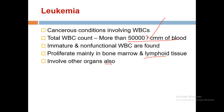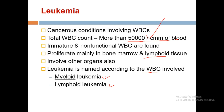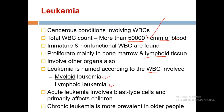Leukemia is named according to the WBCs involved: myeloid leukemia and lymphoid leukemia. Myeloid leukemia shows increased granulocytes (neutrophils, basophils, eosinophils) and monocytes; lymphoid leukemia shows increased lymphocytes. Acute leukemia involves blast-type cells and primarily affects children, while chronic leukemia is more prevalent in older people.